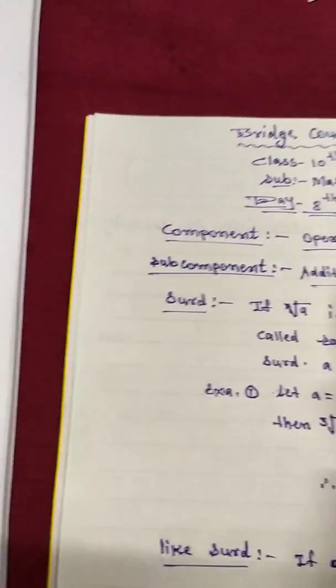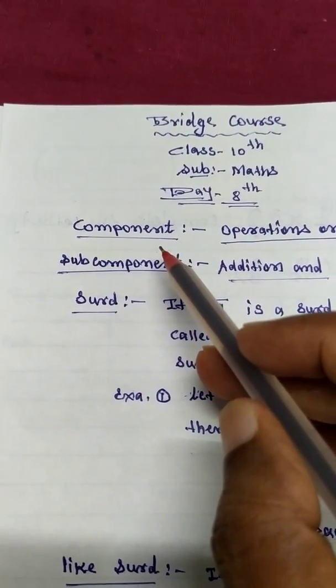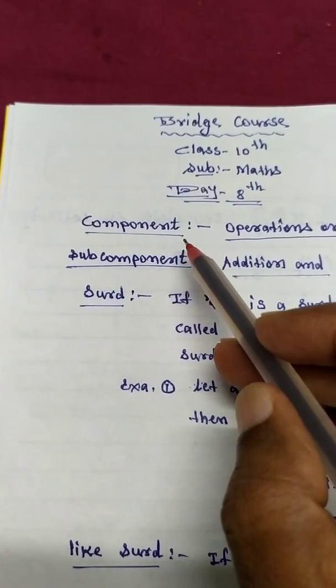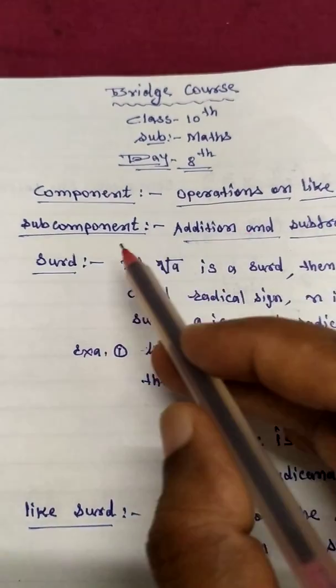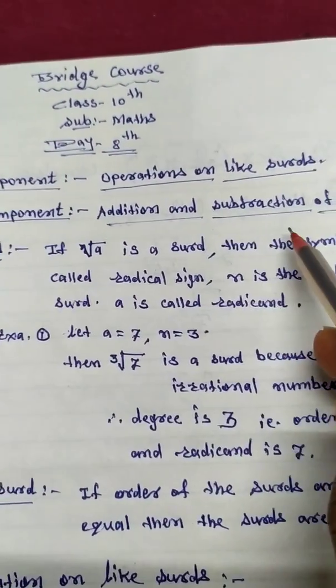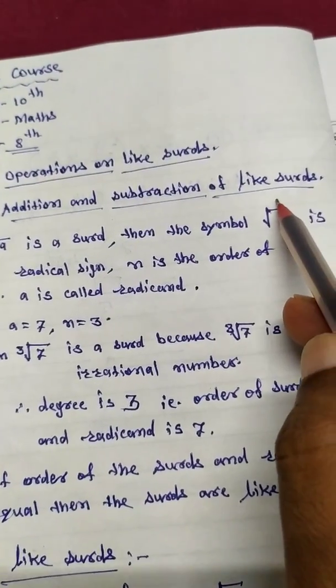Now in day 8, today we see component. That is operation on surds, and subcomponent is addition and subtraction of like surds.